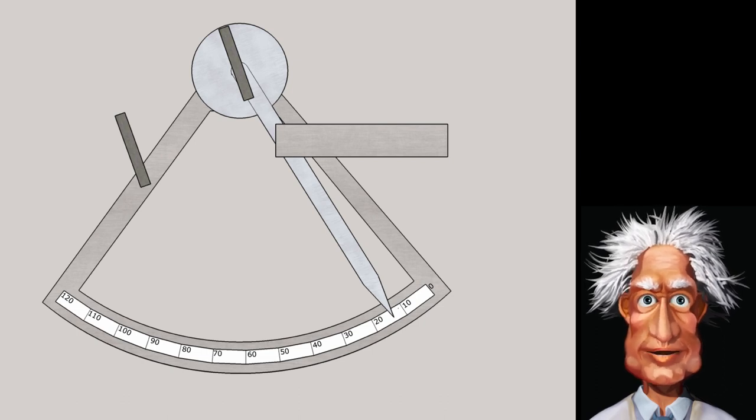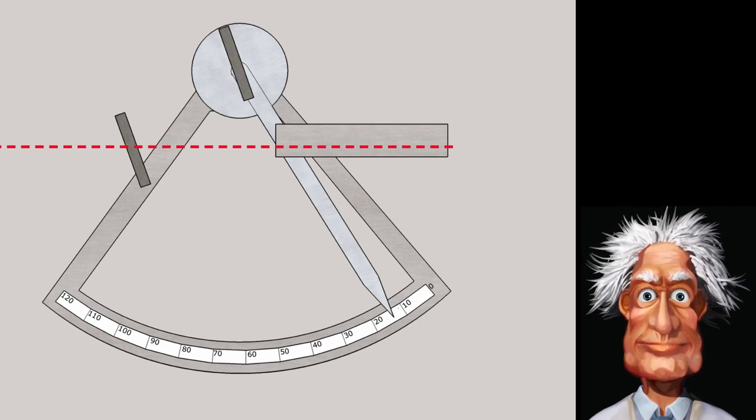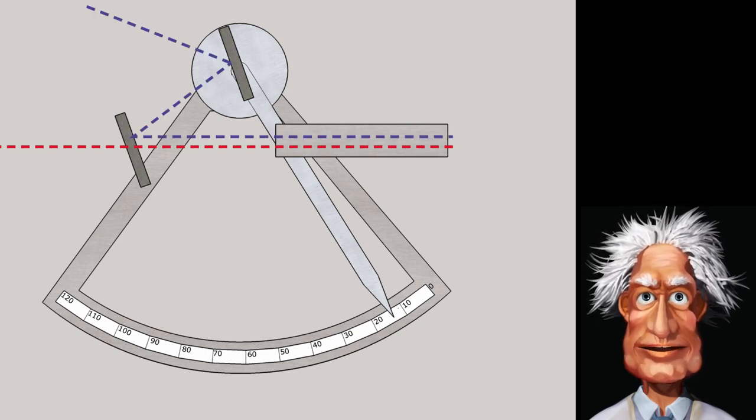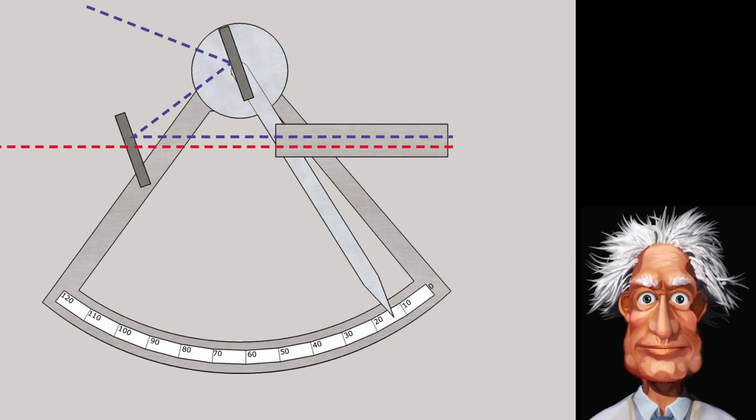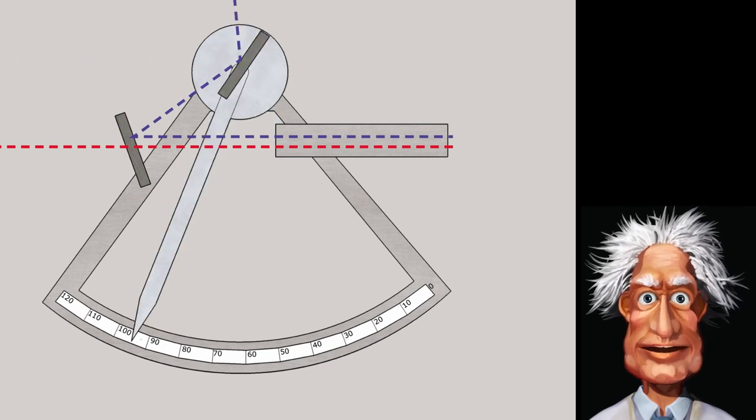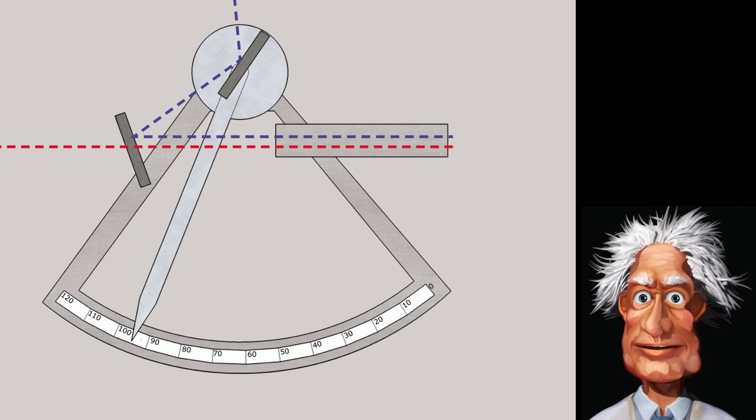You use the sextant by looking through the telescope and aiming the apparatus at the horizon, using the left part of the horizon mirror. Then you adjust the index arm in such a way that on the right side of the horizon mirror you can see the star, or the sun, or the moon, next to the horizon. Then you can read off the angle of the index scale.